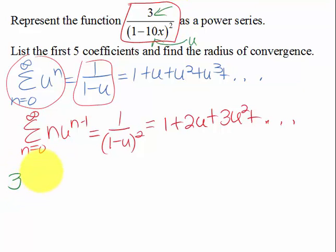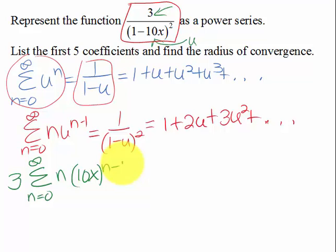So we're going to write that down. So we have 3 sum, as we go from 0 to infinity, of n, and then right here we're going to put in our 10x to the n minus 1. Now we're going to actually doctor this up just a little bit, because if we put in 0, we see we just get 0, and then when we put in 1, we basically get the 1 that was right here.